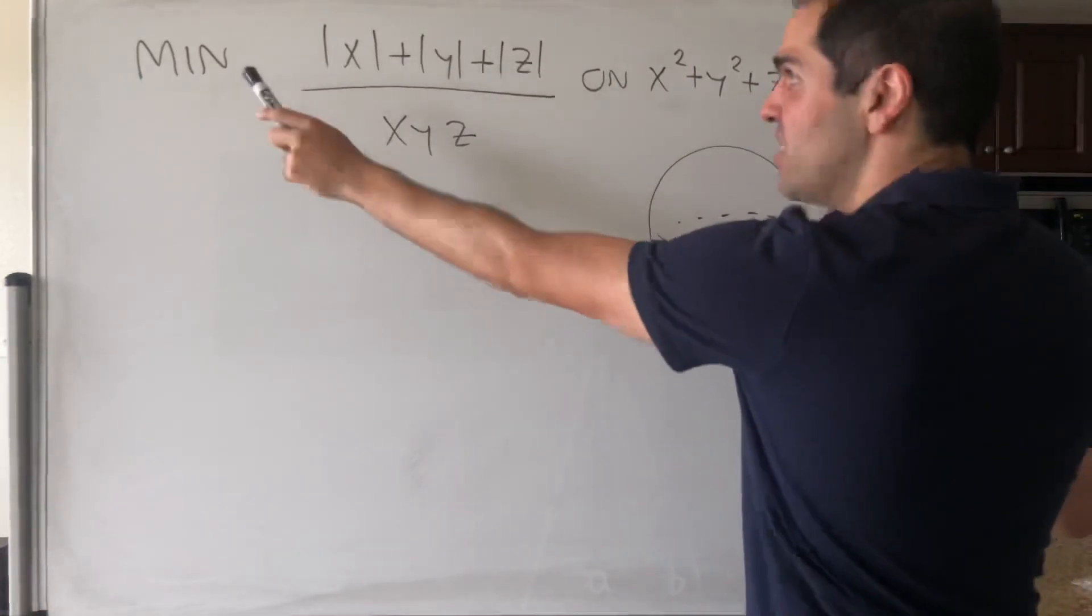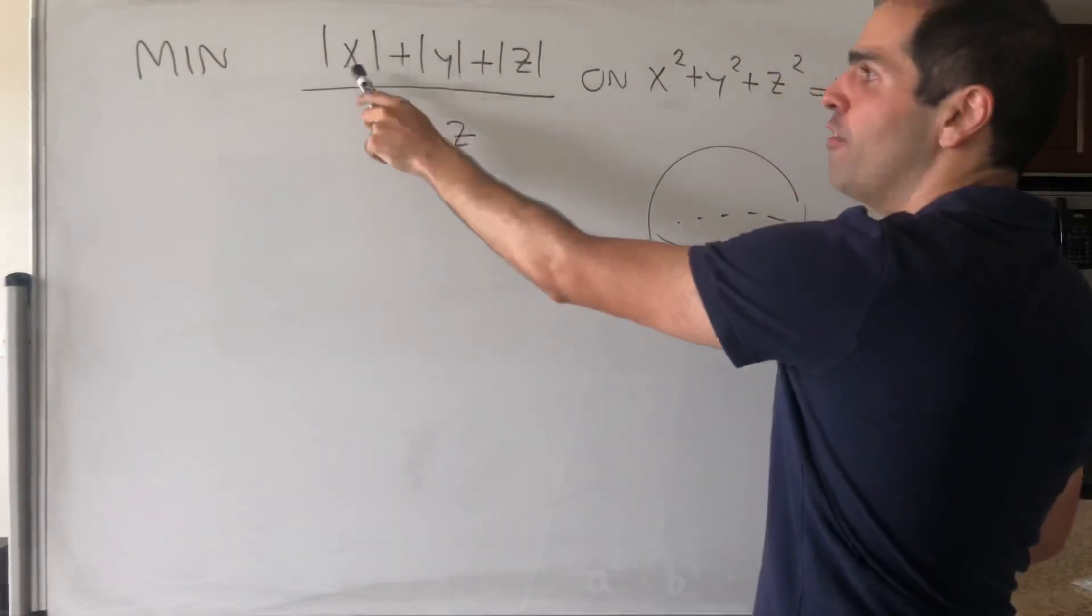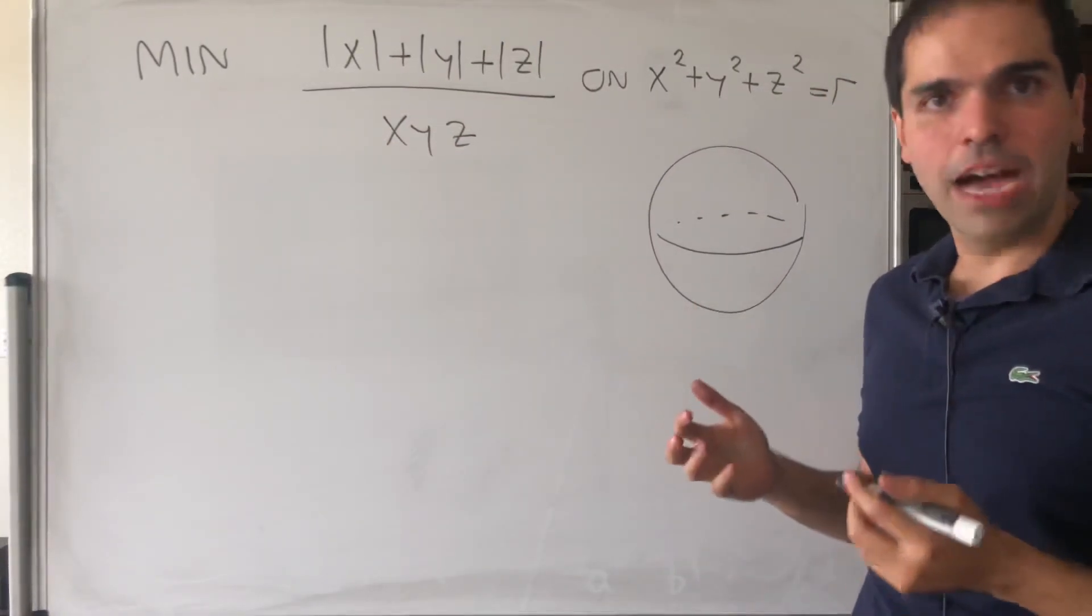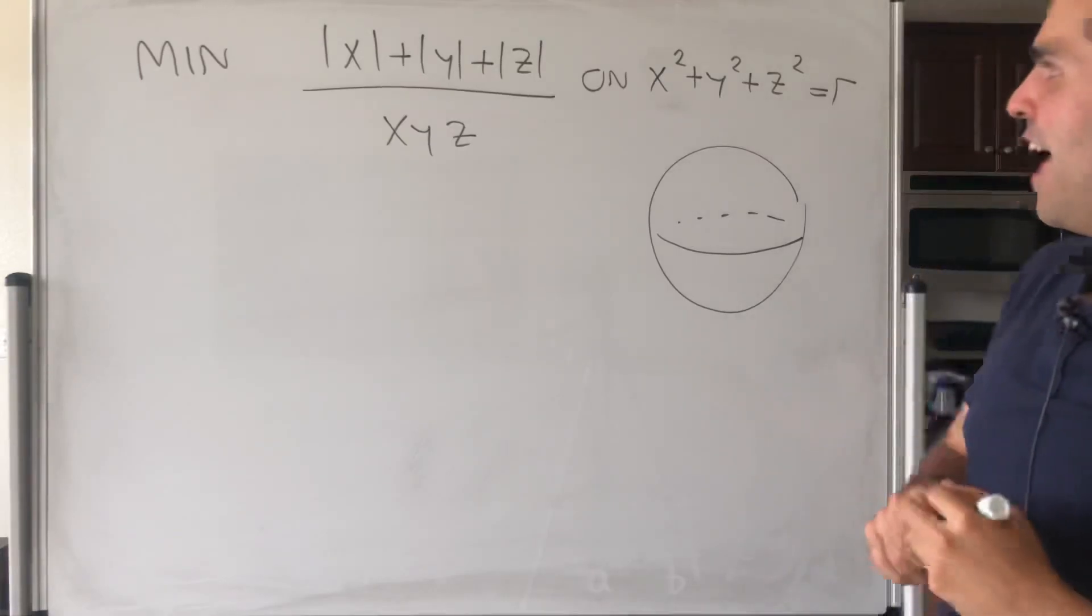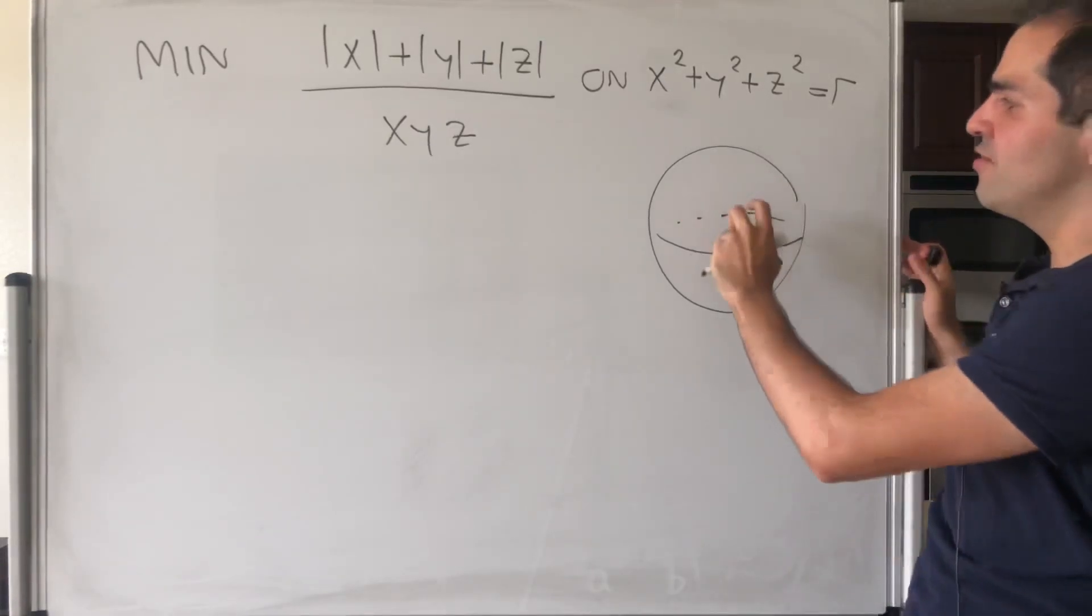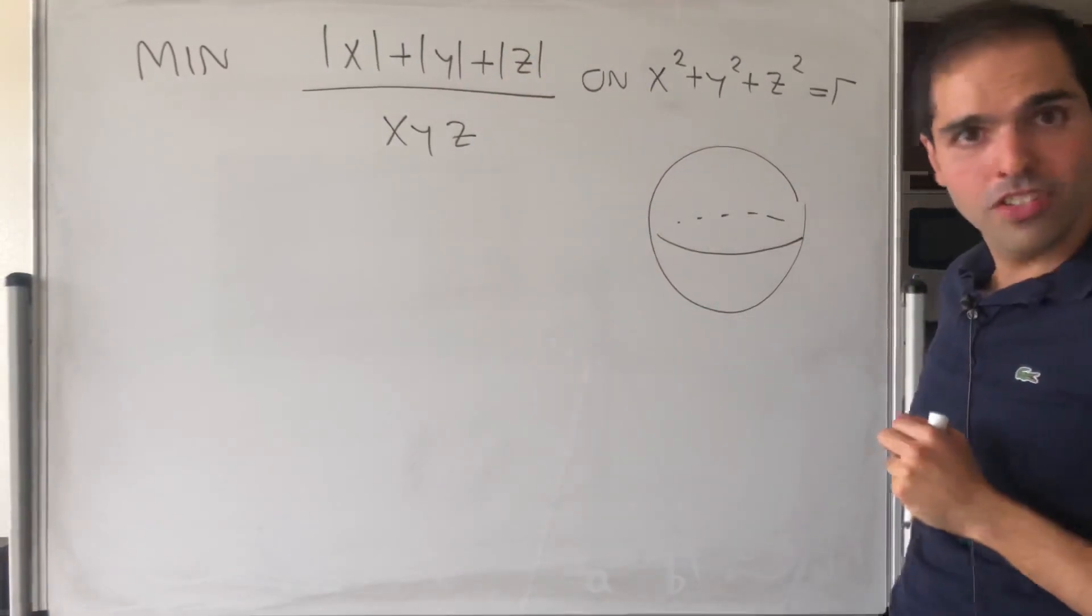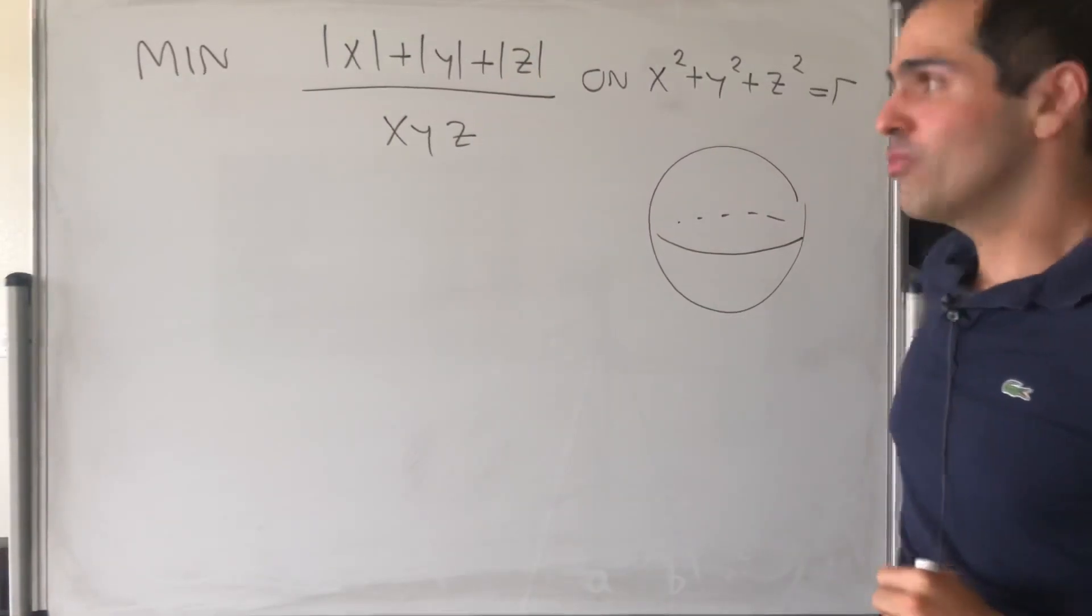And in particular, let's try to find the minimum of the function absolute value of x plus absolute value of y plus absolute value of z over x, y, z on that sphere. So suppose you're walking on earth and want to find the smallest value of that function. That's what we'll solve today.